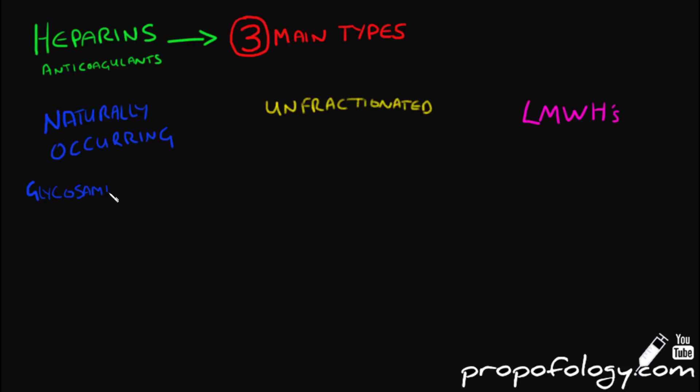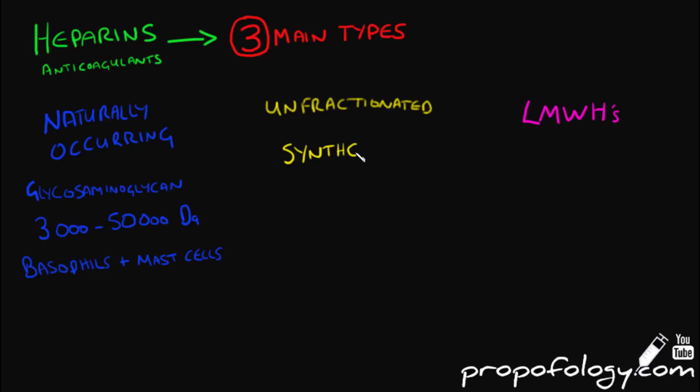Naturally occurring heparins are glycosaminoglycans and are large molecules between 3,000 and 50,000 daltons. They are made by mast cells and basophils in the body.